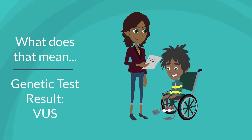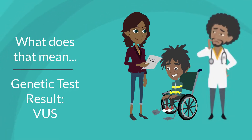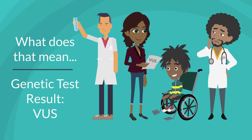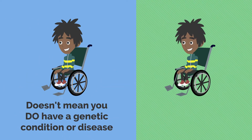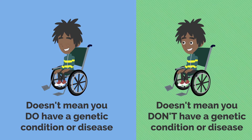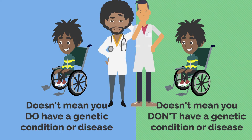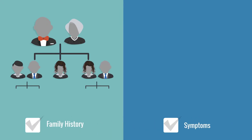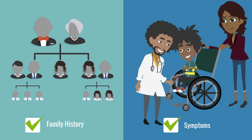What does that mean for your symptoms or your diagnosis? If you get a genetic test result back that says you have a variant of uncertain significance, that means the doctors and scientists don't know yet if your spelling error causes a specific genetic diagnosis or disease. This doesn't mean you do have a genetic condition or disease, but it also doesn't mean that you don't. Doctors and scientists simply don't have enough information yet to know. So doctors will use family history and symptoms to address your current medical concern. In the future, doctors and scientists may know more about your variant.